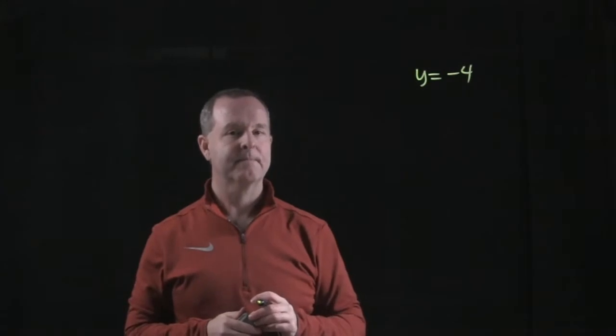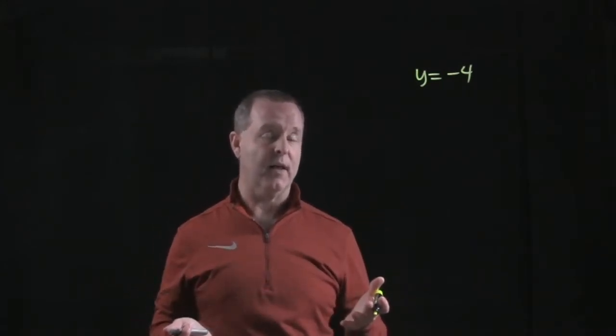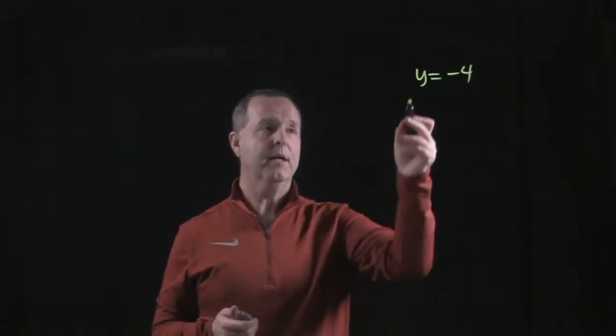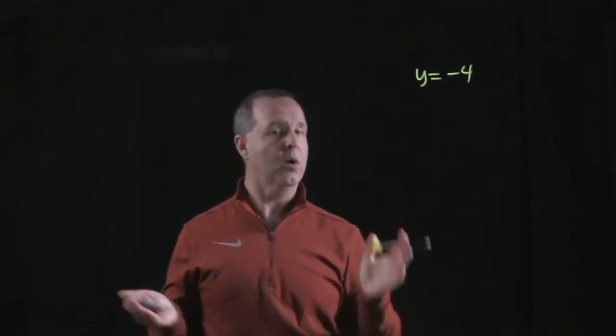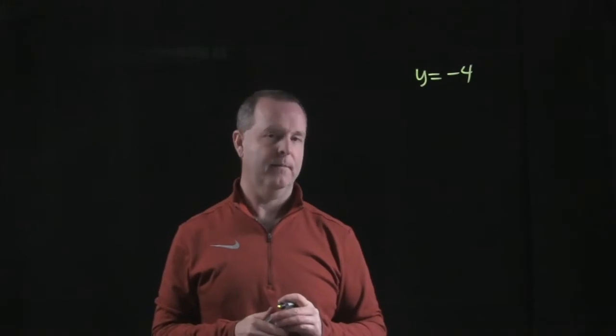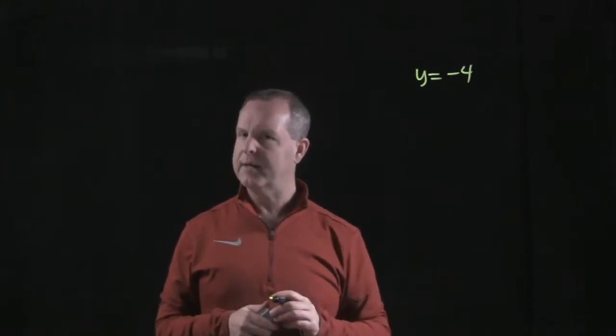So let's say, for example, I have a line that says y equals negative 4. Now it's in a context here that we're on a two-dimensional plane. So it's not just y equals negative 4 at one point, rather it's a line y equals negative 4. So how do you graph that? What does that look like?